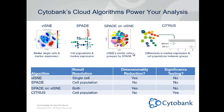Cytobank has several different machine learning algorithms poised to help find results. This table lists a few different features of each algorithm that differentiate them. For example, Citrus is going to provide result resolution at the cell population level. This tool does not have a dimensionality reduction component but does have significance testing. So Citrus is a great tool if you're looking for differences in marker expression or cell population abundance between groups.